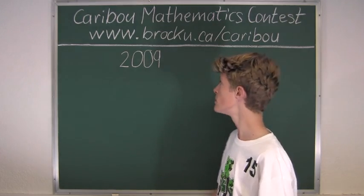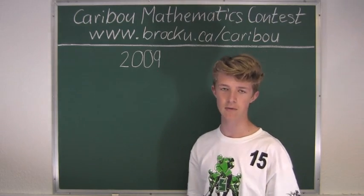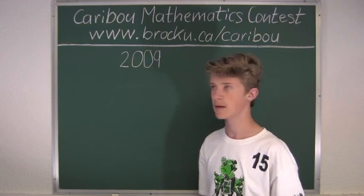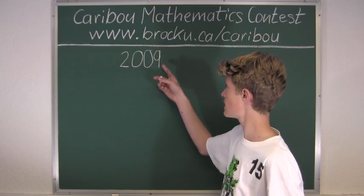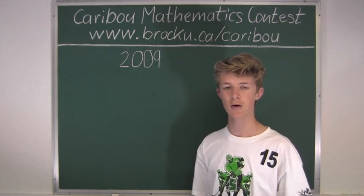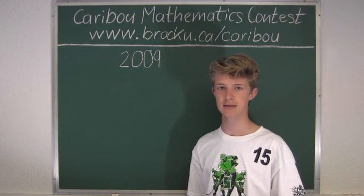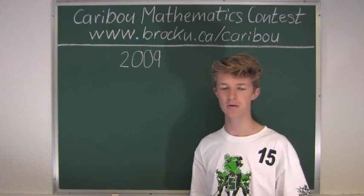And again, 4 is an even number, so that doesn't work. So now we would go to 5. Well it can't be divisible by 5 because it doesn't end in a 0 or a 5. So again, we know 6 doesn't work because it's even. So now we will go to 7.